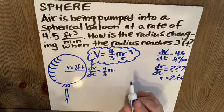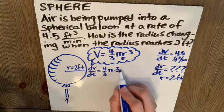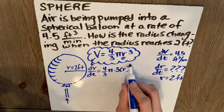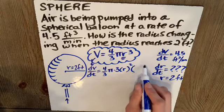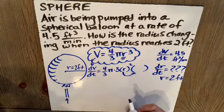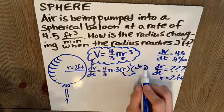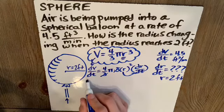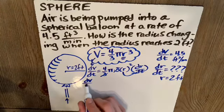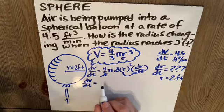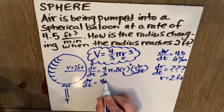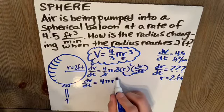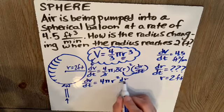I'm using both the power rule and the chain rule. 3 times r squared times the derivative of whatever's inside that parentheses with respect to time. These 3's cancel and I'm left with dV/dt is equal to 4 pi r squared dr/dt.